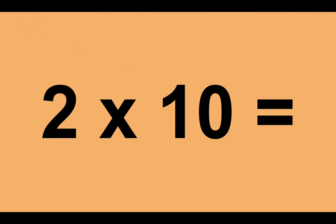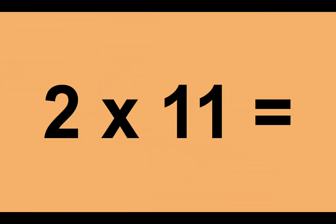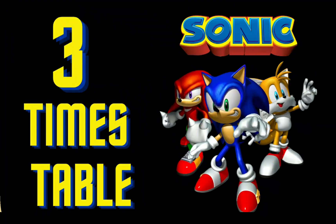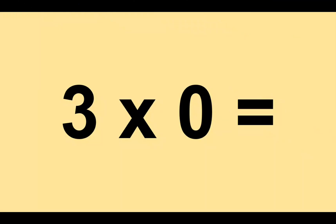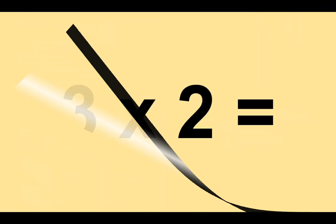Two times ten equals twenty. Two times eleven equals twenty-two. Two times twelve equals twenty-four. Three times zero equals zero. Three times one equals three. Three times two equals six.